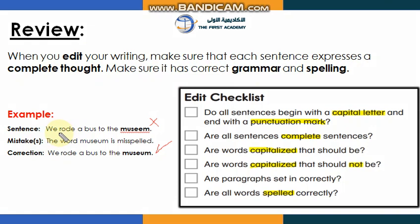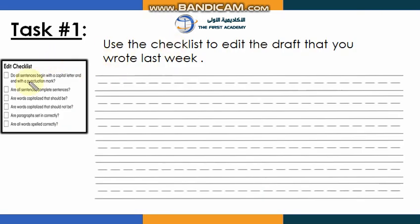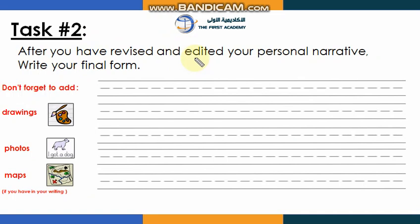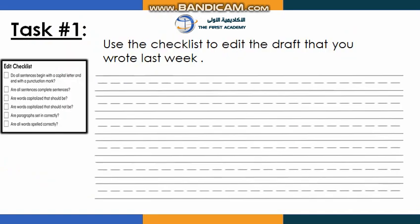As you can see, there is a sentence with some mistakes — what we need to do is edit the mistakes and then write the final sentence. Use the checklist to edit the draft that you wrote last week. After you have revised and edited your personal narrative, write your final form. Don't forget to add drawings, photos, and maps. Remember the checklist: start with a capital letter, end your sentence with a period, check for spelling mistakes and grammatical mistakes.